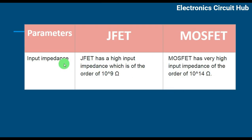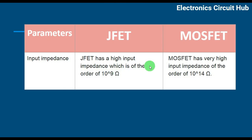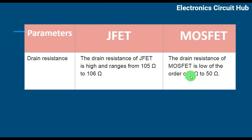Input Impedance: JFET has an input impedance in the order of 10 to the power 9 Ohm. MOSFET has a very high impedance in the order of 10 to the power 14 Ohm.